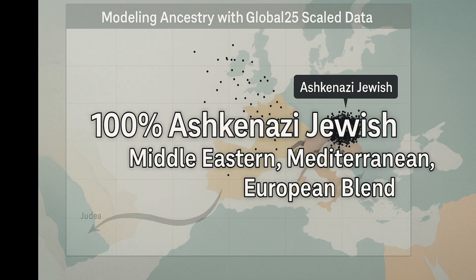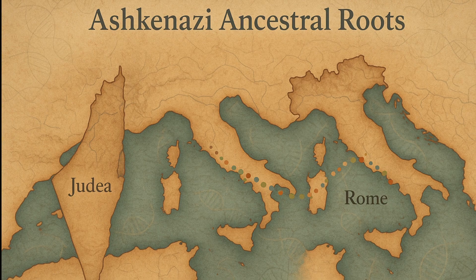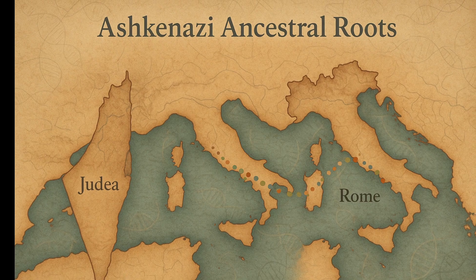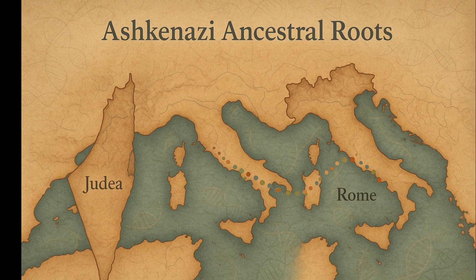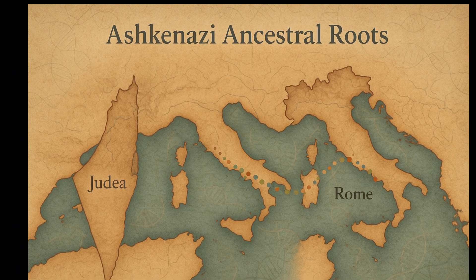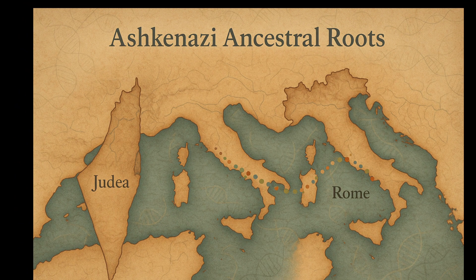According to the model, I'm 100% Ashkenazi Jewish. That means all of my ancestry clusters within the typical Ashkenazi range — a unique population that formed through a blend of Middle Eastern, Mediterranean, and European lineages.